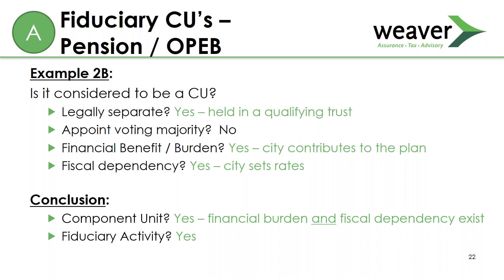GASB also discusses multi-employer defined benefit plans and fiscal dependency. In conversation with Lisa Parker from GASB, it was clarified that if you're in a multi-employer plan where each employer approves the rates, each employer could potentially show it as a component unit, which was not the intent. Therefore, the only organization that can report the plan as a component unit is one that establishes or sets the rates for all other members — only then do you have fiscal dependency.